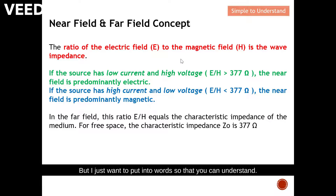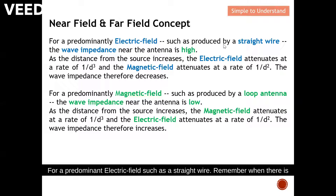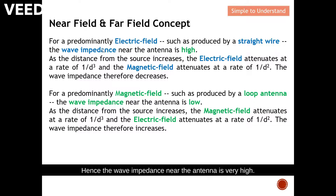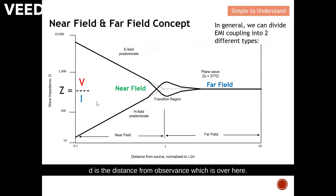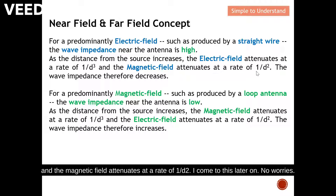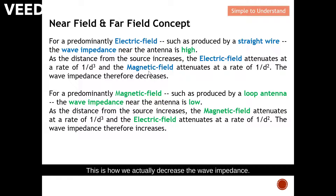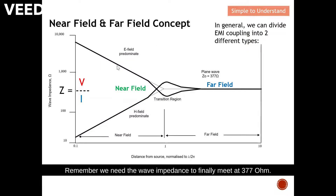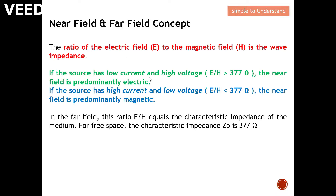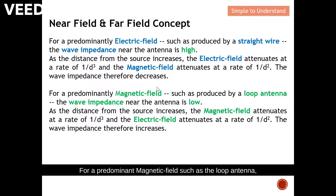For a predominantly electric field source, such as a straight-line antenna, the field is dominated by electric field, and hence the wave impedance near the antenna is very high. As the distance from the source increases, the electric field attenuates at a rate of one over d-cubed, where d is the distance from the observer, and the magnetic field attenuates at a rate of one over d-squared. Therefore the wave impedance decreases, which is how it converges to meet at 377 ohms.